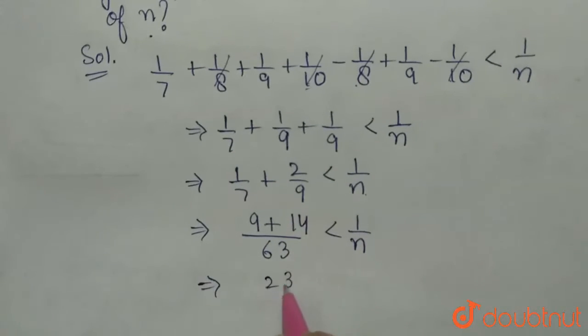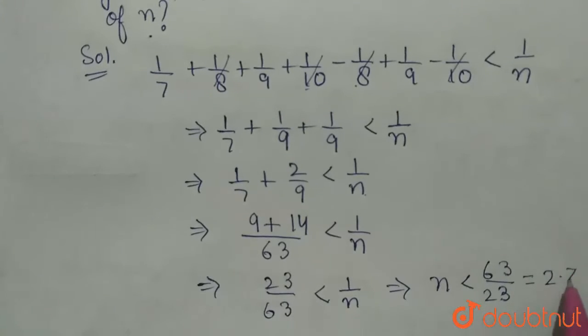to 23/63 < 1/n, which implies n < 63/23, which is equal to 2.73.